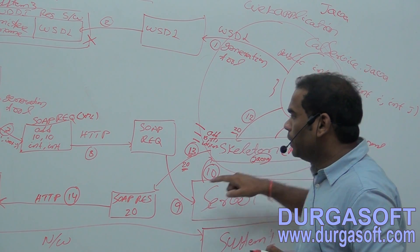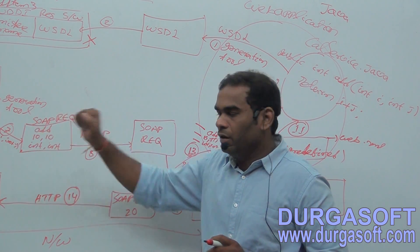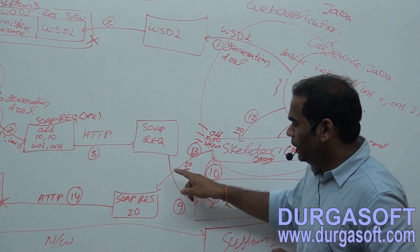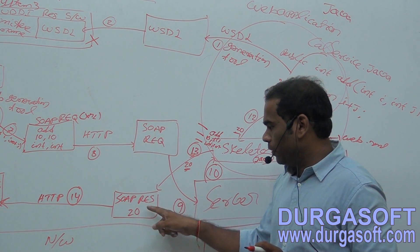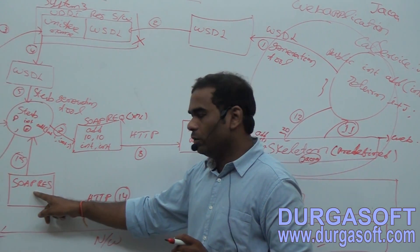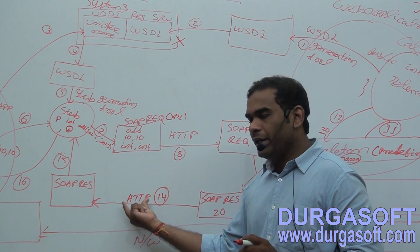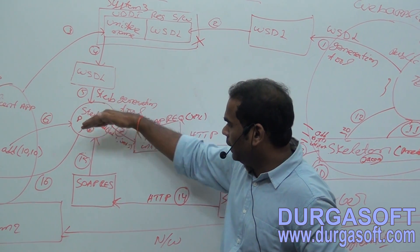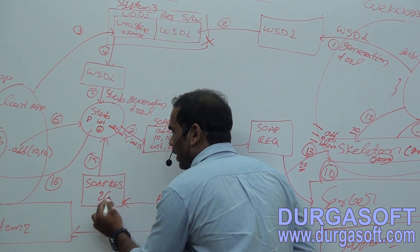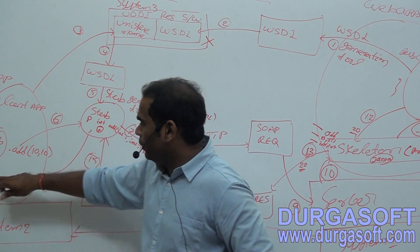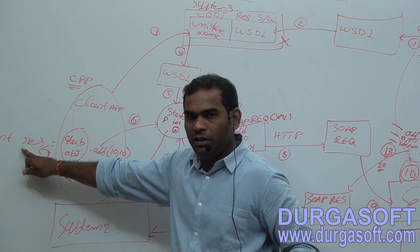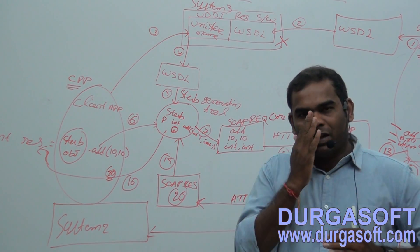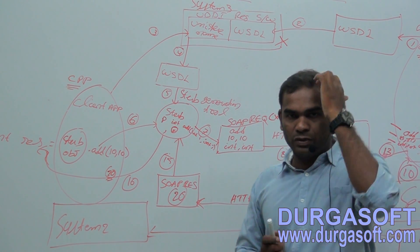That return value of 20 needs to be sent back to the client. In the 13th step, the skeleton stores the value 20 into the SOAP response. The SOAP response then moves from the service location to the client location — again, HTTP protocol does that job. The stub reads the SOAP response and gets the return value. That return value is assigned to a variable in the 16th step. This is how communication happens between two different applications using web services.